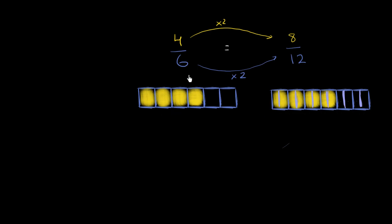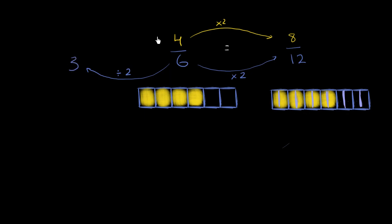And it goes the other way too. This isn't just true with multiplication — it's also true that if we divide the numerator and the denominator by the same quantity, we are going to have an equivalent fraction. So what happens if I were to divide by 2? I'm going to have half the number of equal sections, or only three equal sections. And if I do the same thing in the numerator, 4 divided by 2 is 2. So I'm claiming that 2 thirds is the same fraction as 4 sixths, which is the same fraction as 8 twelfths.